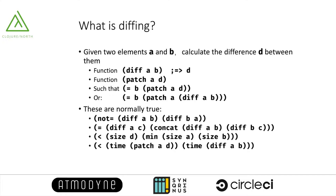There are some important properties of diffing that make it a very useful tool for software architecture. First, diffs are unidirectional — the diff of A and B is not the same as the diff of B and A. Secondly, diffing is also additive: concatenating the diff of A and B with the diff of B and C, you will get back the diff of A and C. These two properties make diffing an ideal tool for tracking changes.